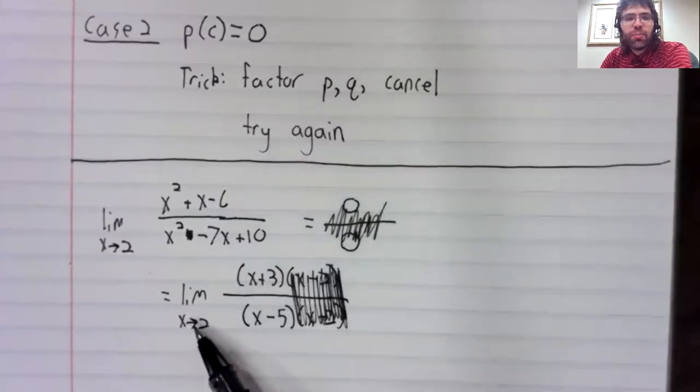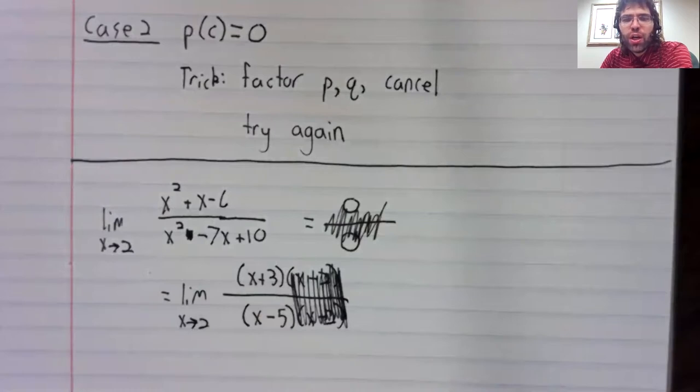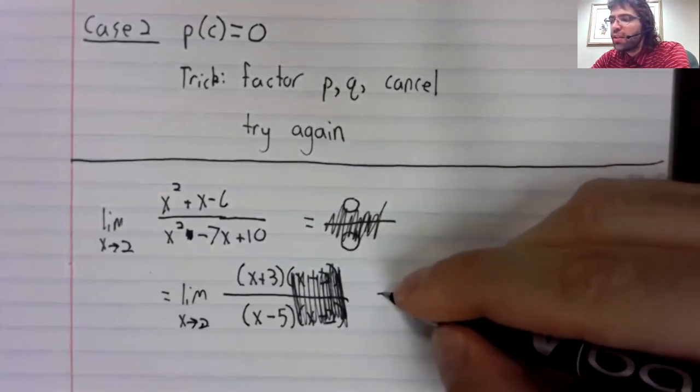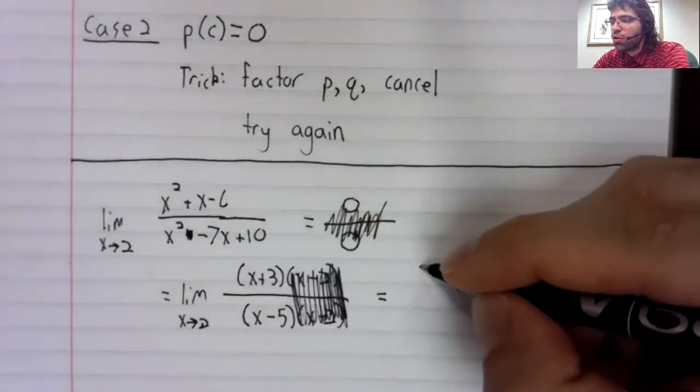We're taking the limit of a rational function. We should be able to take such a limit just by plugging two in, as long as that doesn't give us a division by zero error.